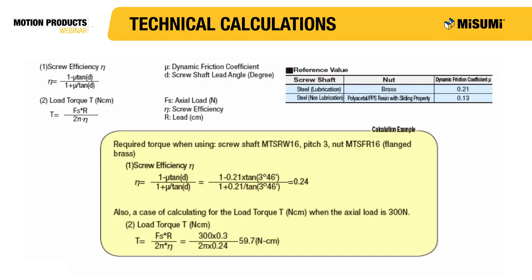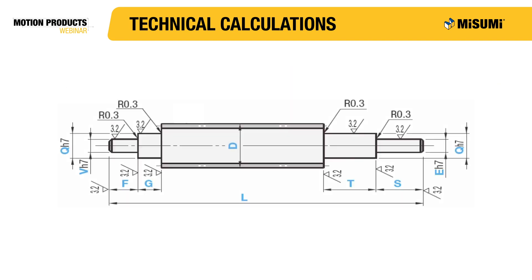Other useful calculations include finding the screw efficiency and load torque. Using the same example conditions as before, the screw efficiency is calculated to be 0.24 and the load torque to be 29.7 Newton-centimeters.